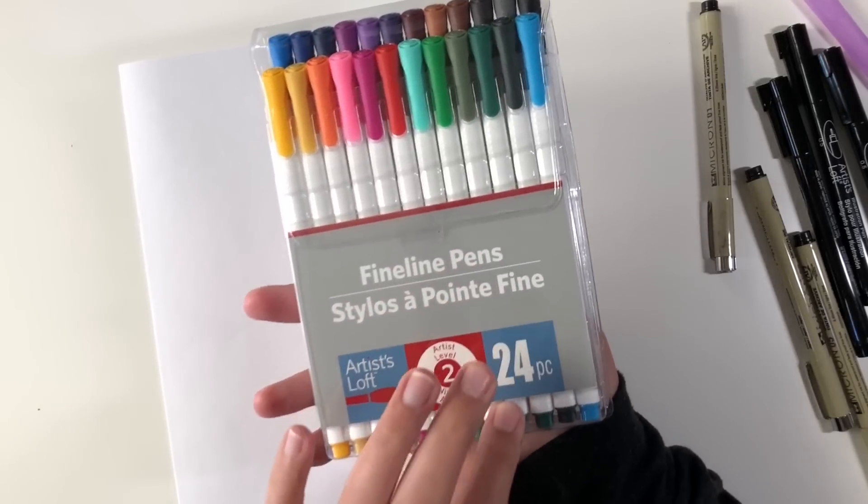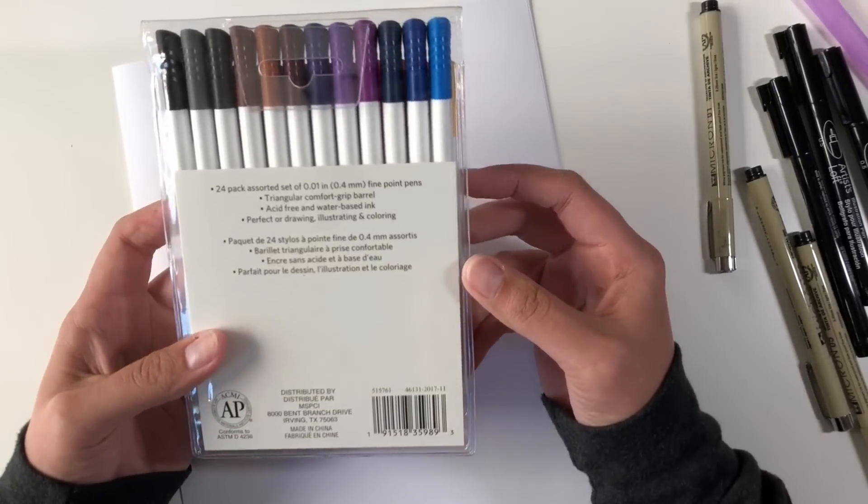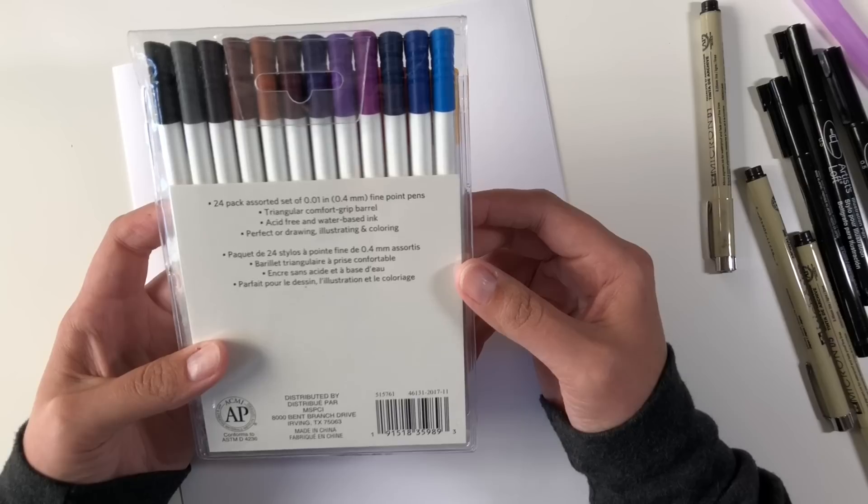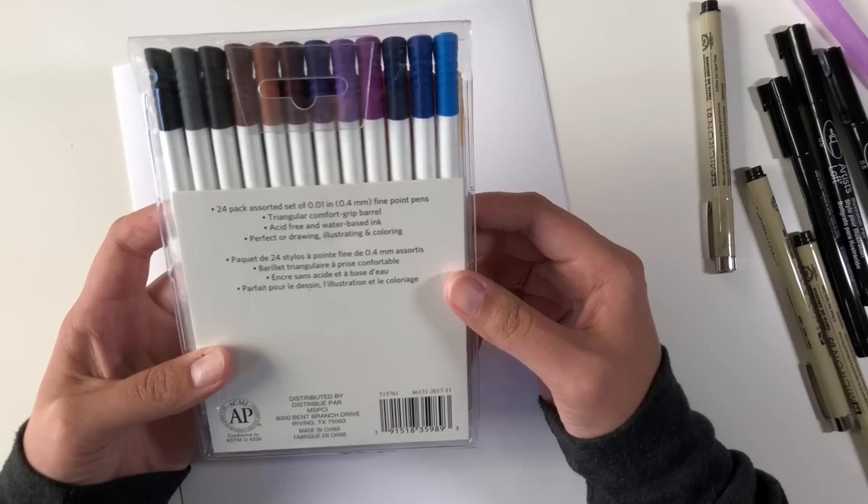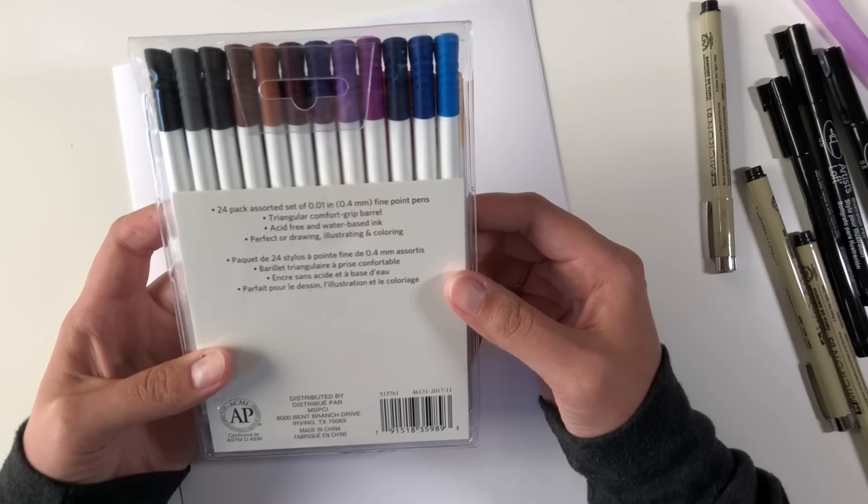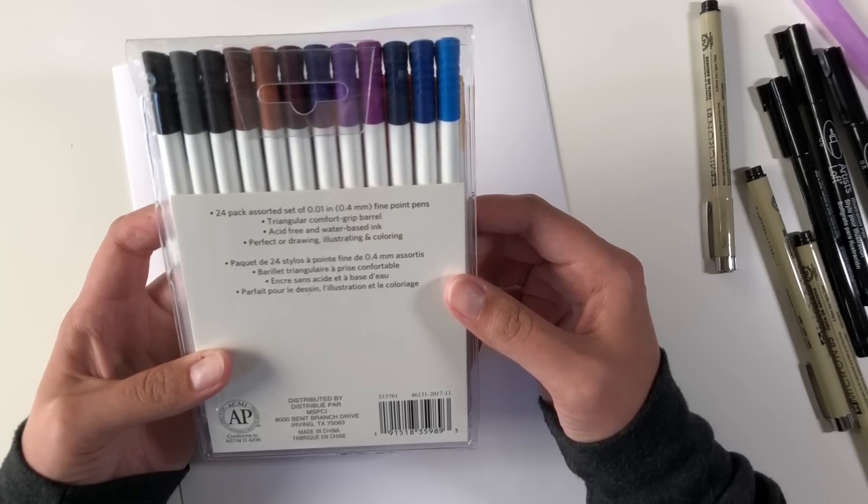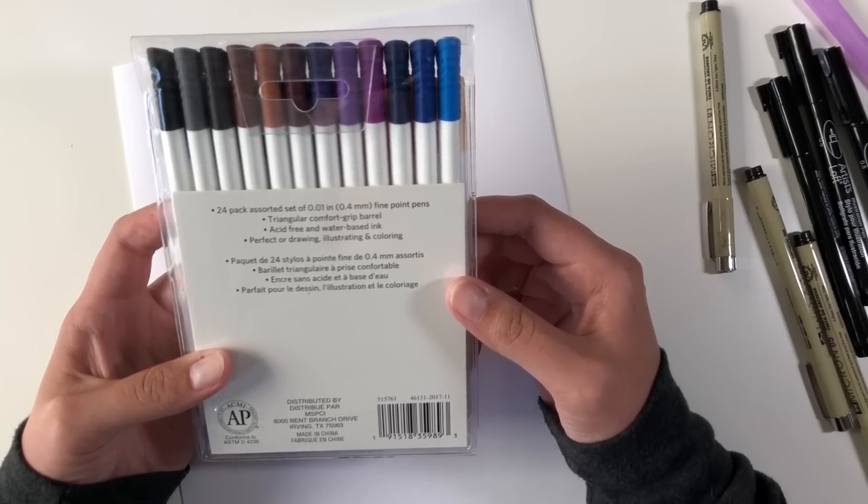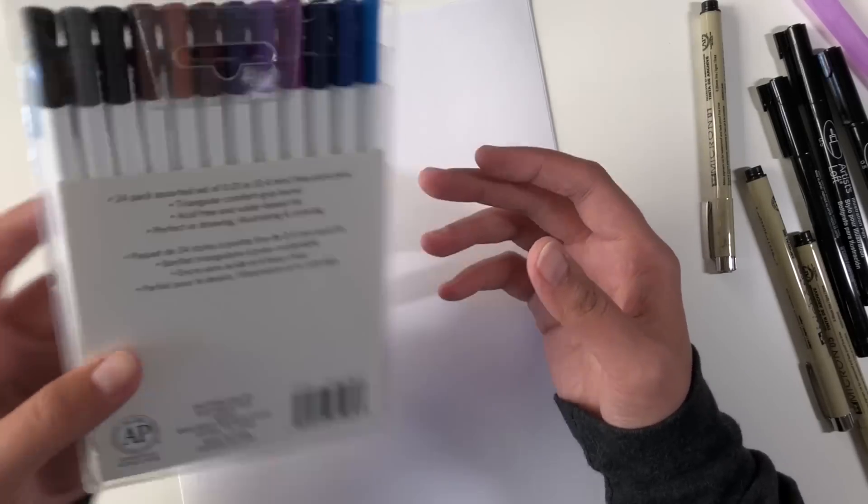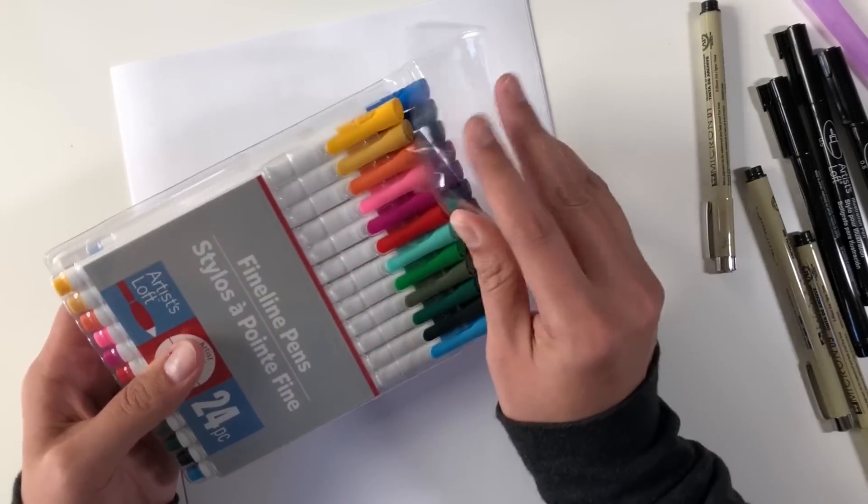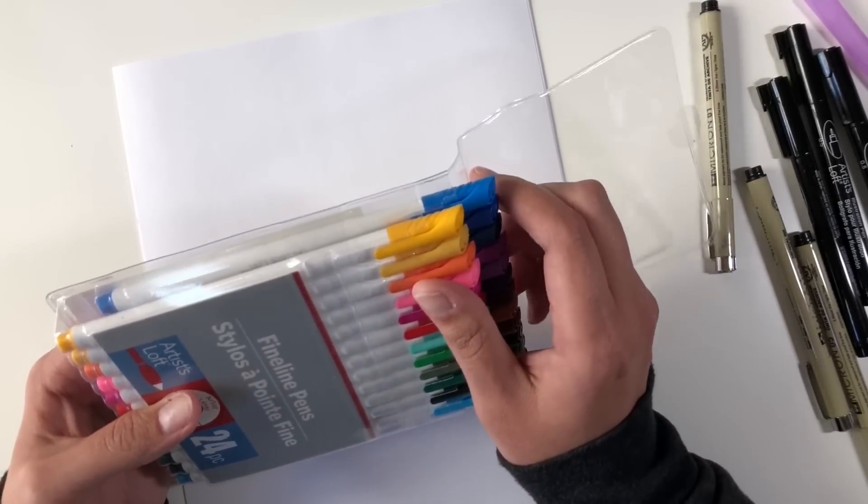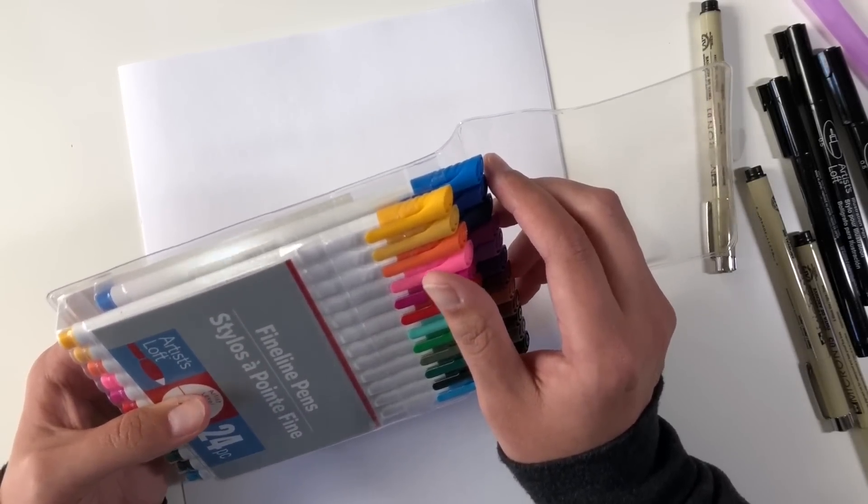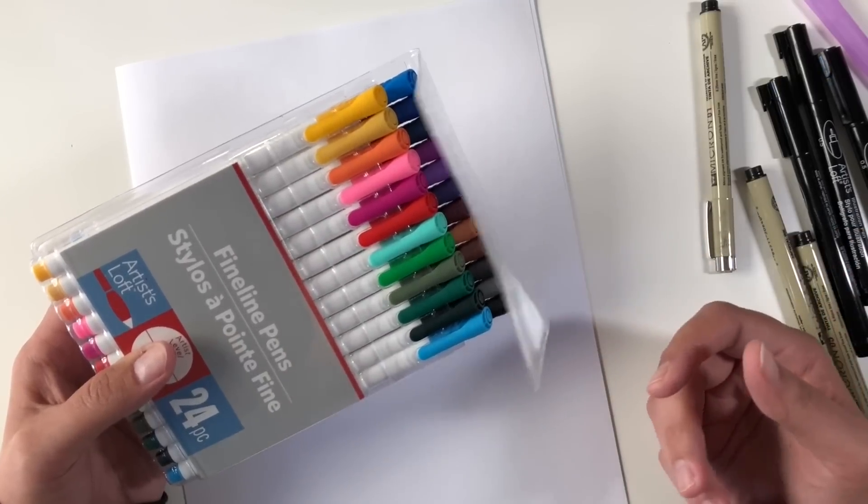So now we're going to take a look at these, the fine line pens. This is the 24 pack. It says that they are acid-free and water-based ink, perfect for drawing, coloring, and illustrating. They're 0.4 millimeter fine point pens, and they're triangular comfort grip barrel. Again, much like the Staedtler's. So I'm just going to take a look at these colors, what they feel like when you write with them and what the color selection looks like.